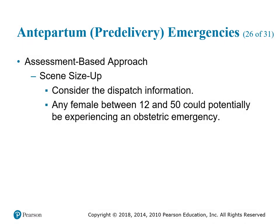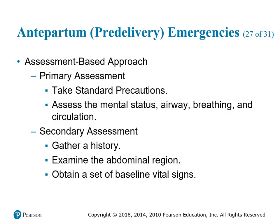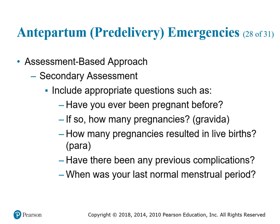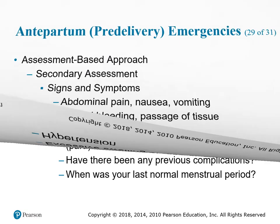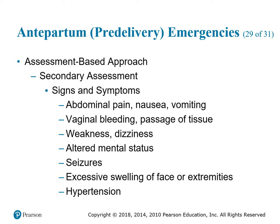Consider that any female between the ages of 20 to 50 could potentially be experiencing obstetric emergencies. Assessment-based approach: take standard precautions, assess mental status, airway, breathing, and circulation. Secondary assessment: gather a history, examine the abdominal region, and obtain vital signs. Include appropriate questions such as: have you ever been pregnant before, and how many pregnancies (gravida)? How many pregnancies resulted in live births (para)? Have there been any previous complications? When was your last menstrual period? Also assess for abdominal pain, nausea, vomiting, vaginal bleeding, passage of tissue, weakness, dizziness, altered mental status, seizures, excessive swelling, and hypertension.